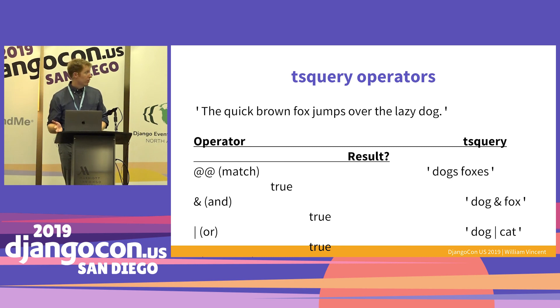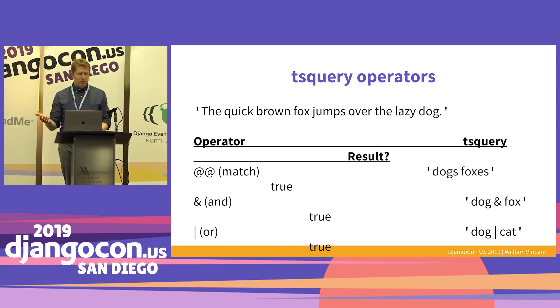There are four default operators: match — which you'll almost always use — AND, OR, and negation. So searching 'dogs and foxes' against our document would return true.